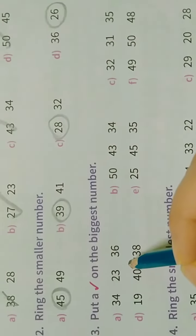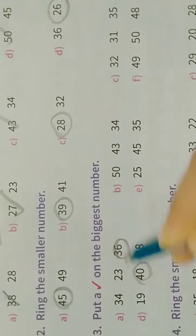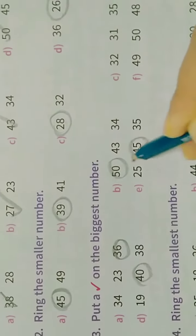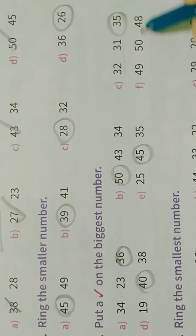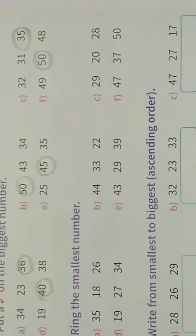Next, put tick on the biggest number. The biggest number, what is it? 36, 40, or 50? 50. Here, 45, 35, or 50? 50. Okay, now circle the smallest number.